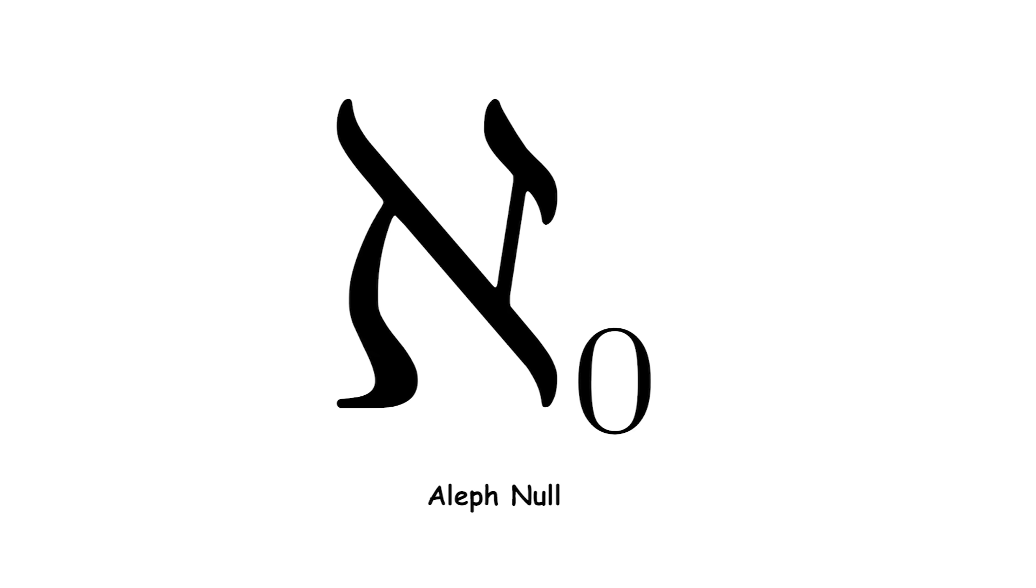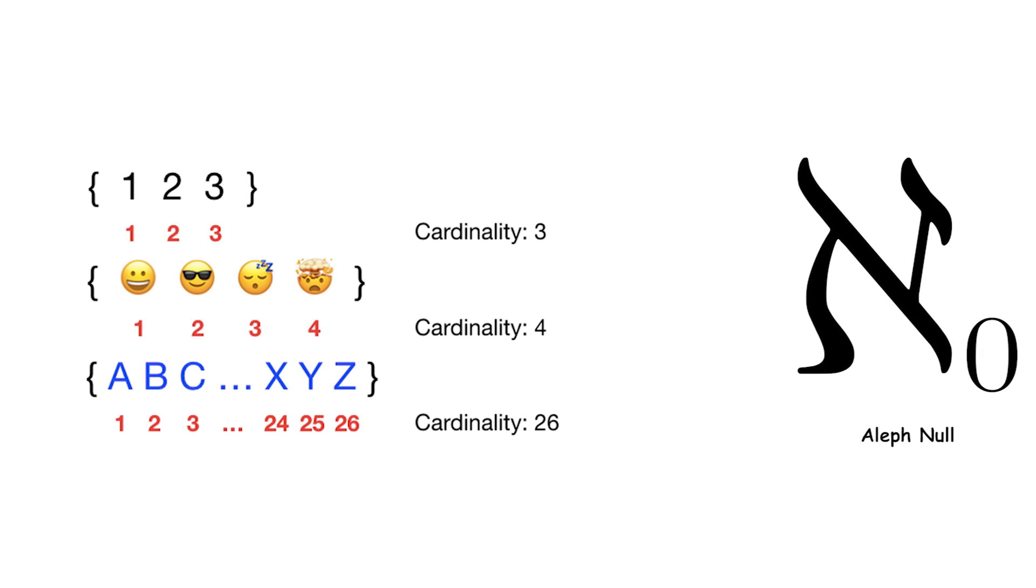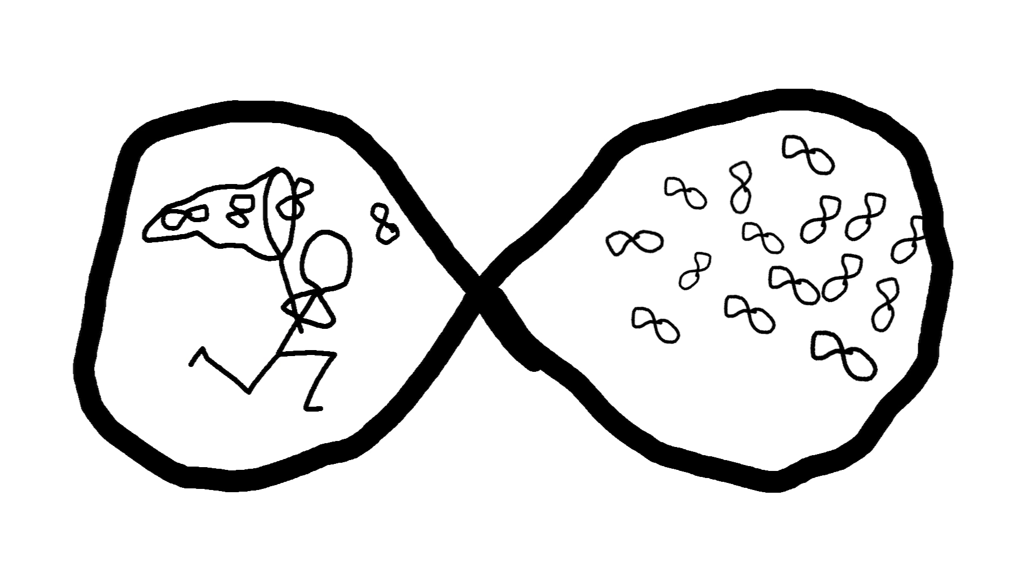Aleph null is a cardinal number in set theory that represents the cardinality or size of the set of natural numbers 1, 2, 3, and so on. It is the first transfinite cardinal number and is used to describe the size of infinite sets.